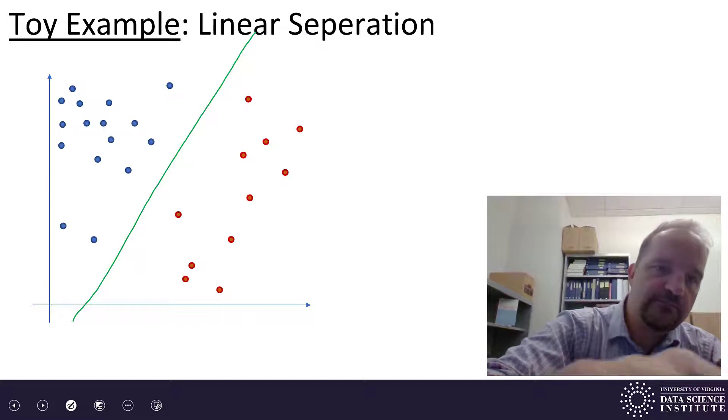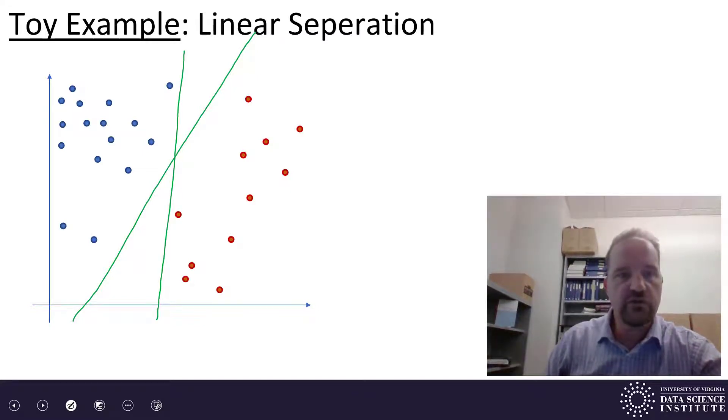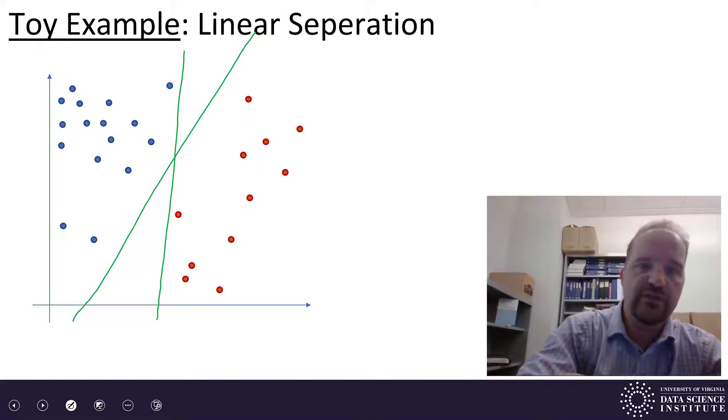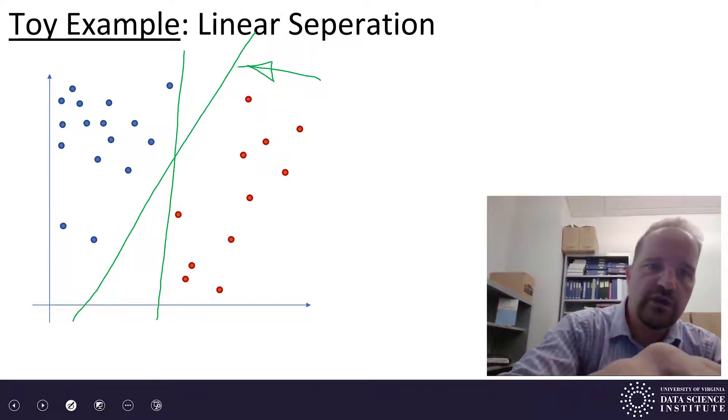Now how did I know to pick that line and not this line? Both of those lines that I just drew would be perfect classification results. And so any sort of cross-validation isn't going to pick between these. So why visually? Clearly that one's better. But why? How do we know it's better?